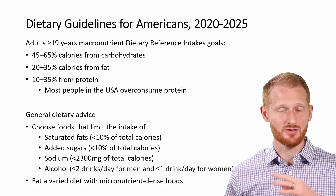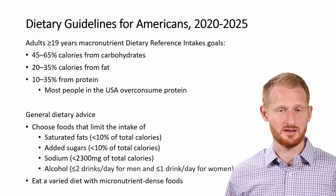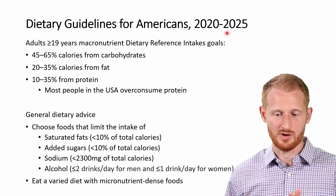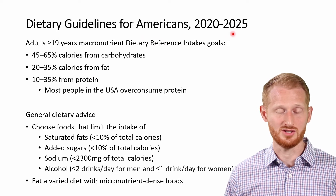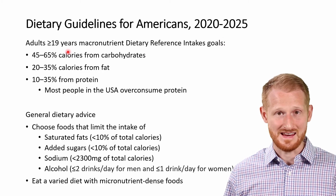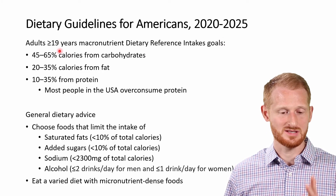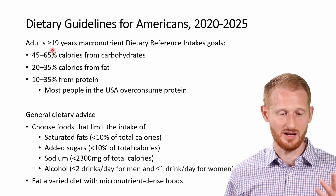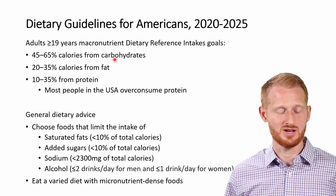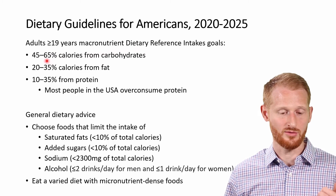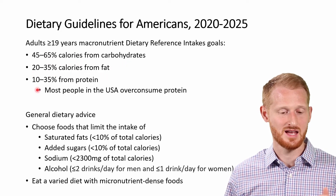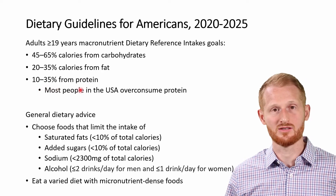Much of the information in this video comes from the Dietary Guidelines for Americans, 2020 to 2025 edition, which is redone about every five years. I'm going to be focused on the adult category — 19 years of age and above. The macronutrient recommendations for people 19 and above are: 45 to 65% of calories from carbohydrates, 20 to 35% of calories from fats, and 10 to 35% of calories from protein.